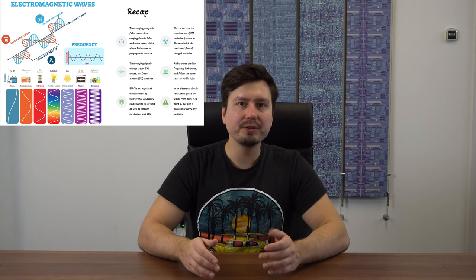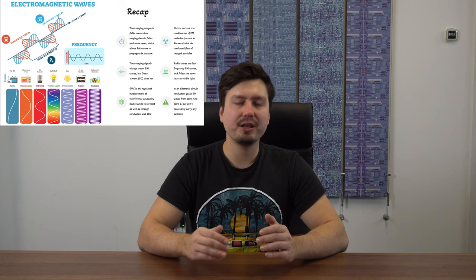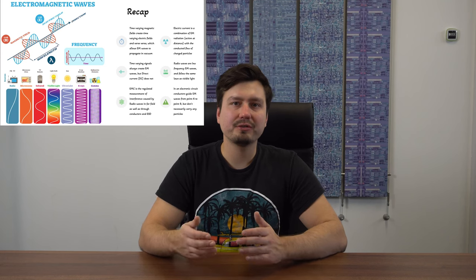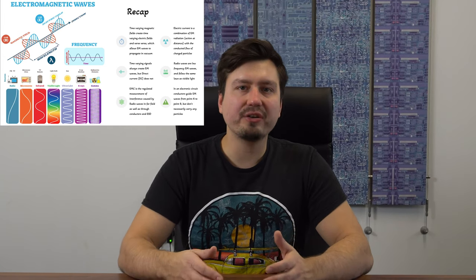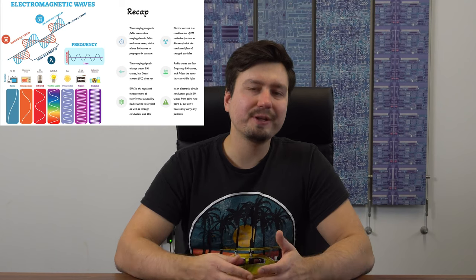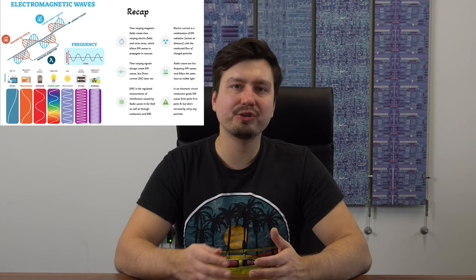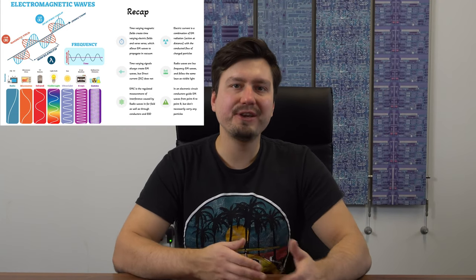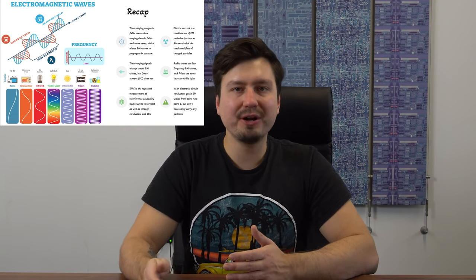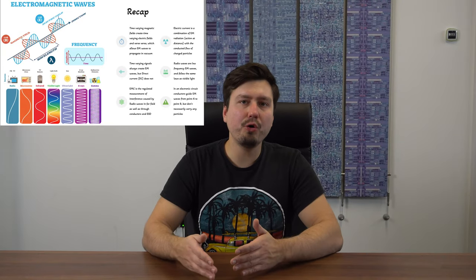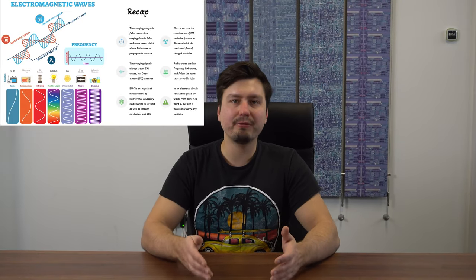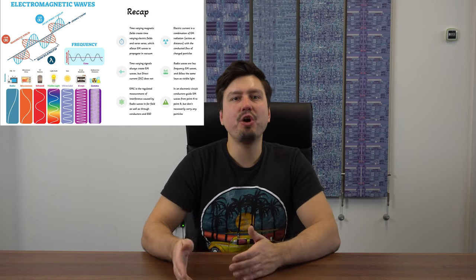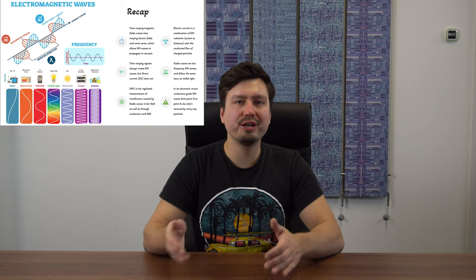However, direct current does not create electromagnetic waves because its voltage is fixed and does not change in time. Electric current as we receive it on a printed circuit board is a combination of electromagnetic radiation, which is action at distance, with the physical flow of charged particles. The physical flow of charged particles is typically governed by Ohm's law, but electromagnetic radiation is not. This is where Ohm's law really falls apart.